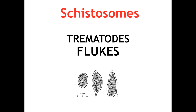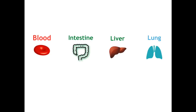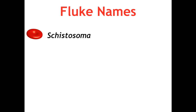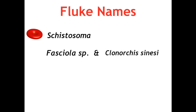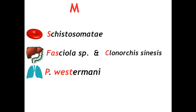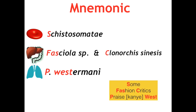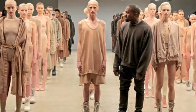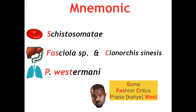In parts one and two of this series I detailed the Schistosoma, because they are the most high-yield for Step — those will be linked below. Today we will go over the highest-yield points for the remaining flukes that infect the liver and lung. The fluke names follow the same order as BILL: Schistosomes are blood flukes; Fasciola species and Clonorchus sinensis infect the GIT and liver (specifically the biliary system); and Paragonimus westermani is our lung fluke.